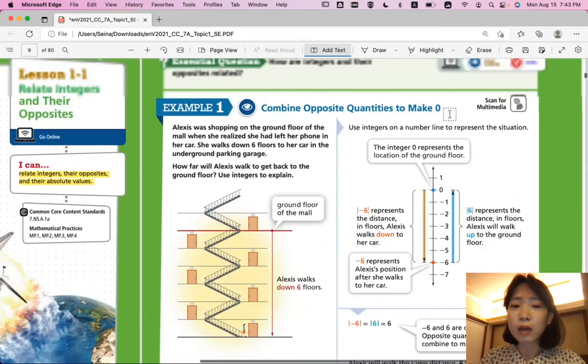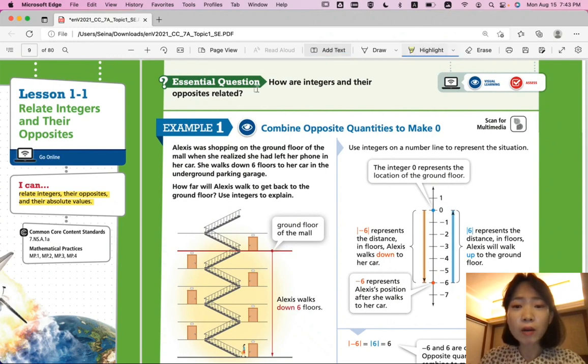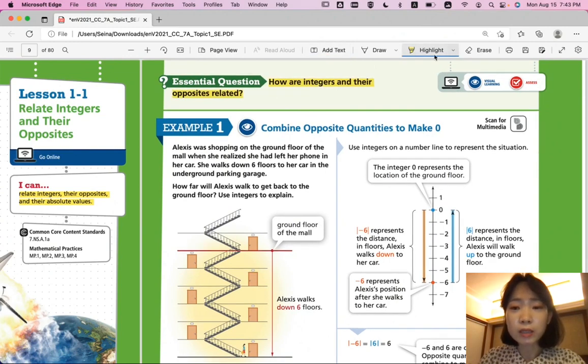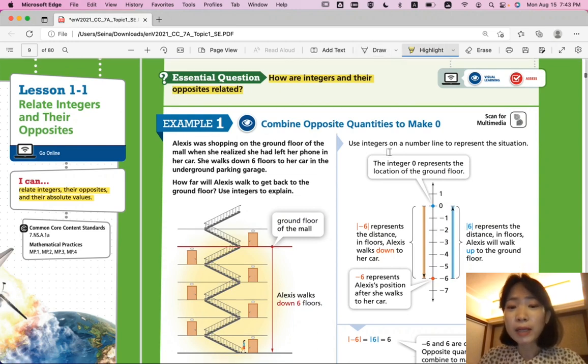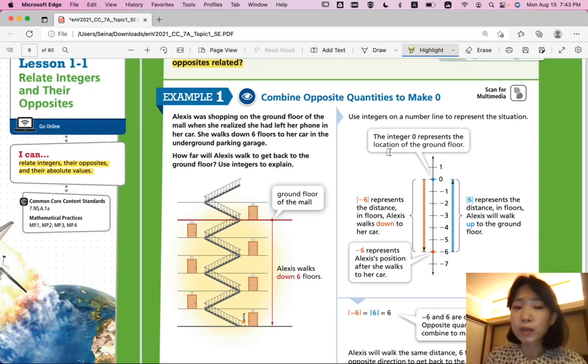Let's look at our first example. So throughout this lesson, think about how the integers and their opposites are related. Example 1, combine opposite quantities to make 0. Alexis was shopping on the ground floor of the mall when she realized she had left her phone in her car. She walks down six floors to her car in the underground parking garage. How far will Alexis walk to get back to the ground floor? Use integers to explain.